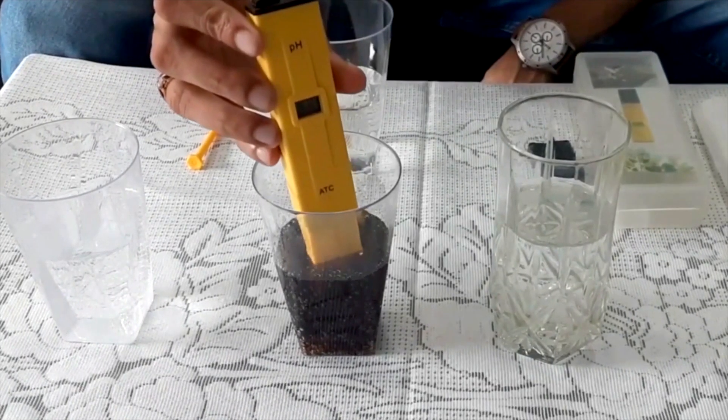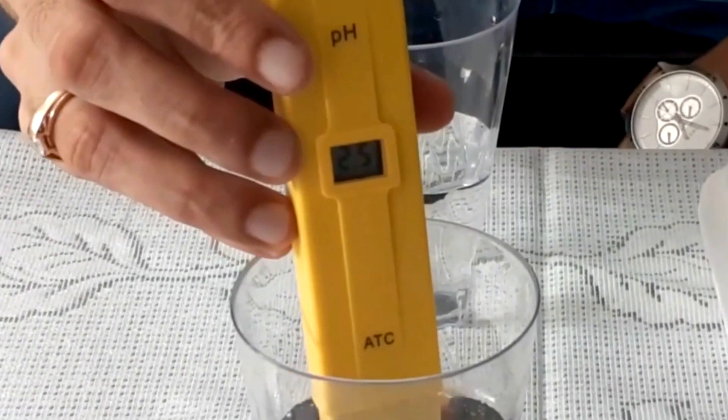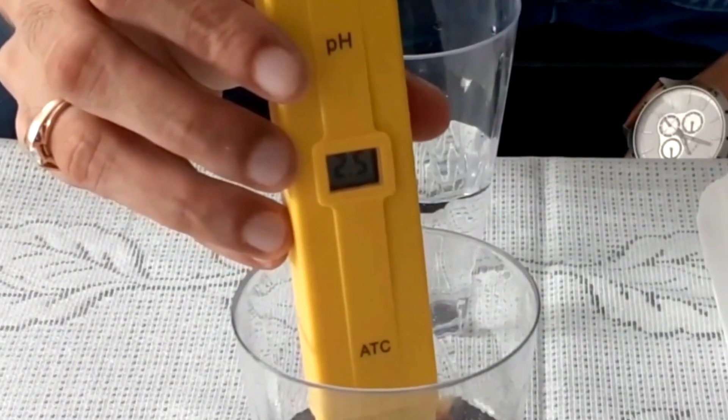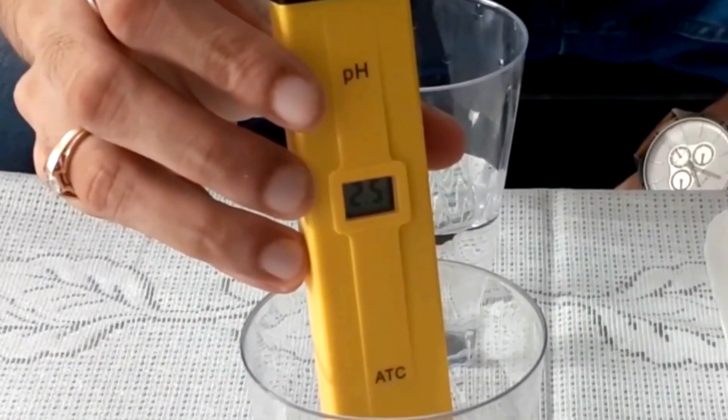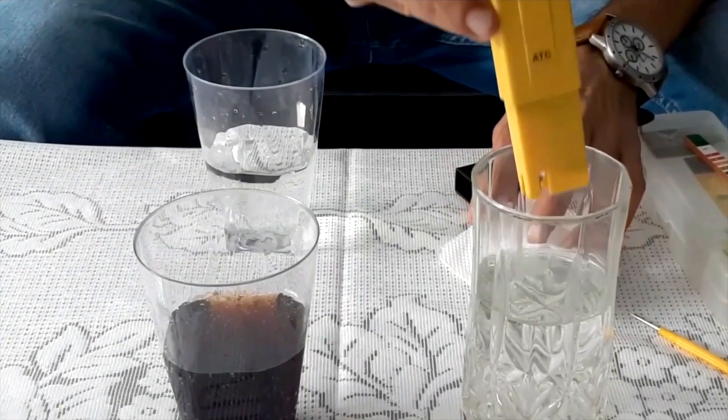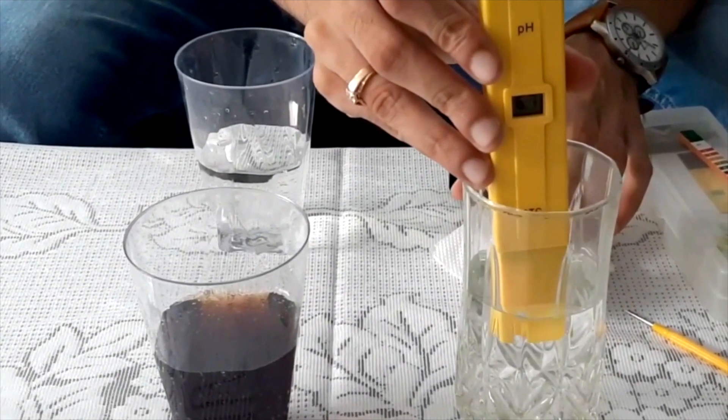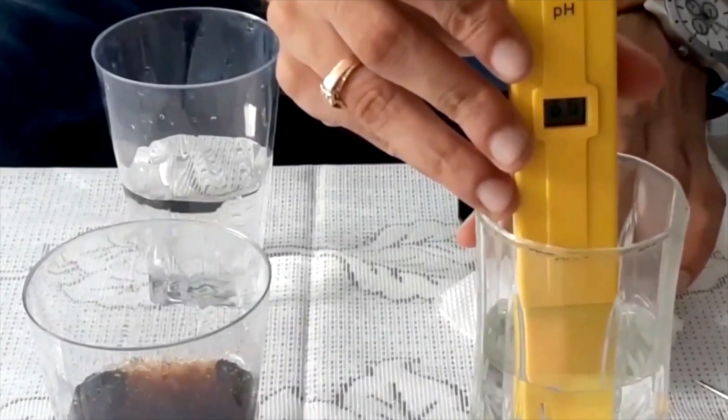Second we'll check pH of coke. It is around 2.5 to 2.6. Third we'll check pH of tap water. It is between 6.5 to 7.5.